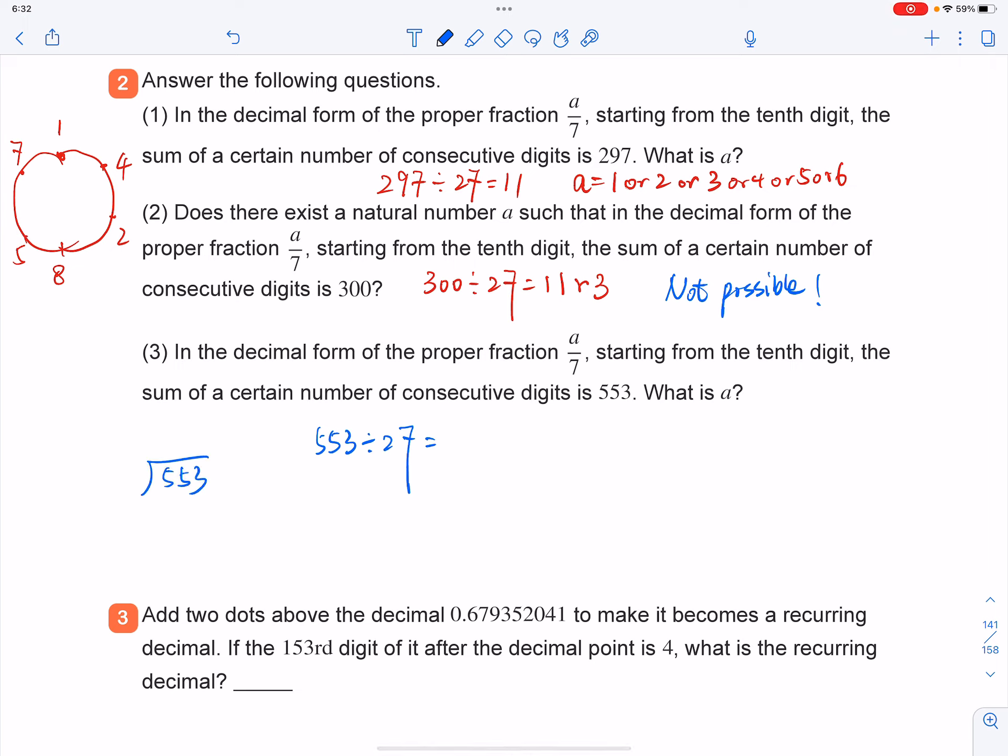553 divided by 27. You got 2 here, which is 54. Do the subtraction. You got 1, 3, and that'll be 0. You got 13 remainder, right? So that'll be 20 with 13 remainder.